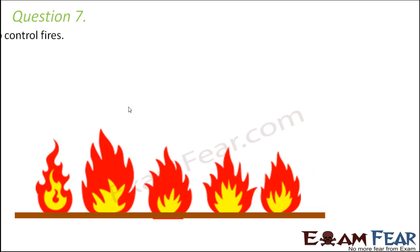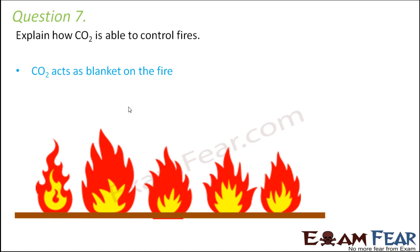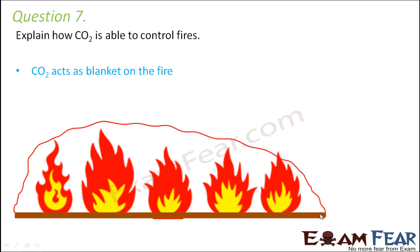Question number seven: explain how carbon dioxide is able to control fires. Carbon dioxide is generally used in scenarios where water cannot be used to control fire — one such scenario is fire involving electrical equipment. When it is sprayed through fire extinguishers, it acts as a blanket over the substance and the fire.